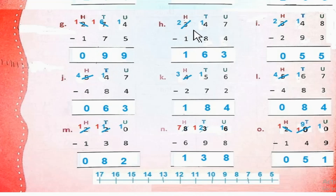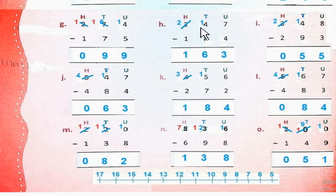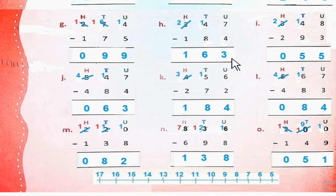Part H: 347 minus 184. 7 minus 4 = 3. 4 से 8 minus नहीं होता। So हम 1 borrow करेंगे — यह 2 रह जाएगा, और यह 14 हो जाएगा। 14 minus 8 = 6. 2 minus 1 = 1. So the answer is 163.